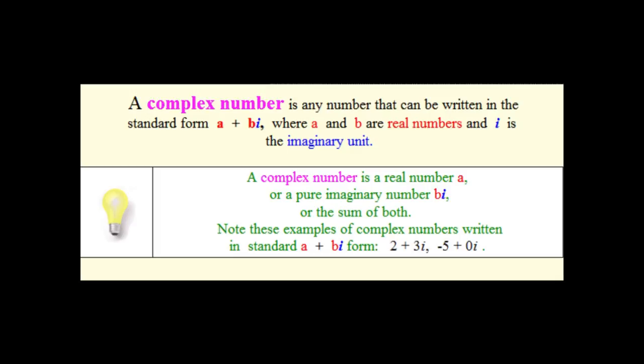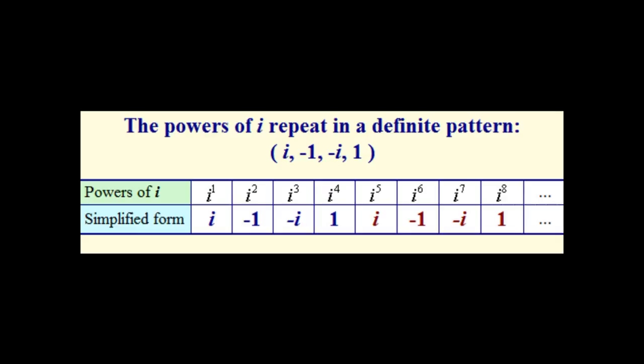Complex numbers are like pure imaginary numbers, but instead are written in the form a plus bi, where a and b are both real numbers and i is imaginary. The imaginary unit i is cyclic, meaning it repeats in a definite pattern as shown here. This repeating pattern helps in simplifying imaginary numbers.